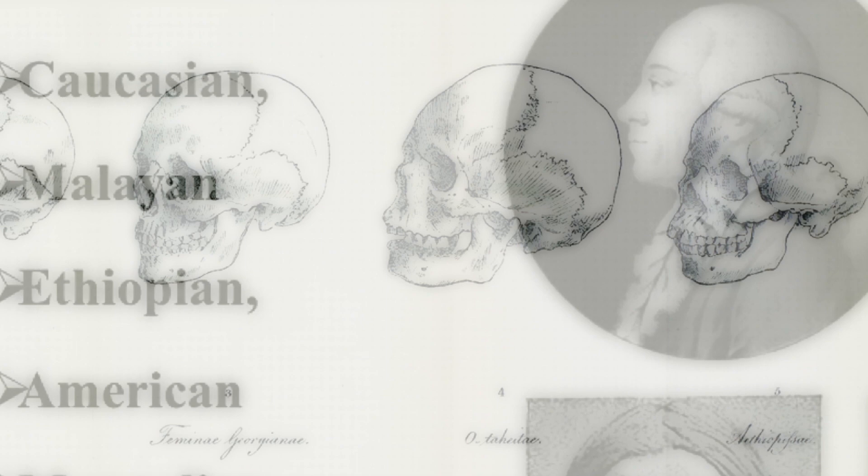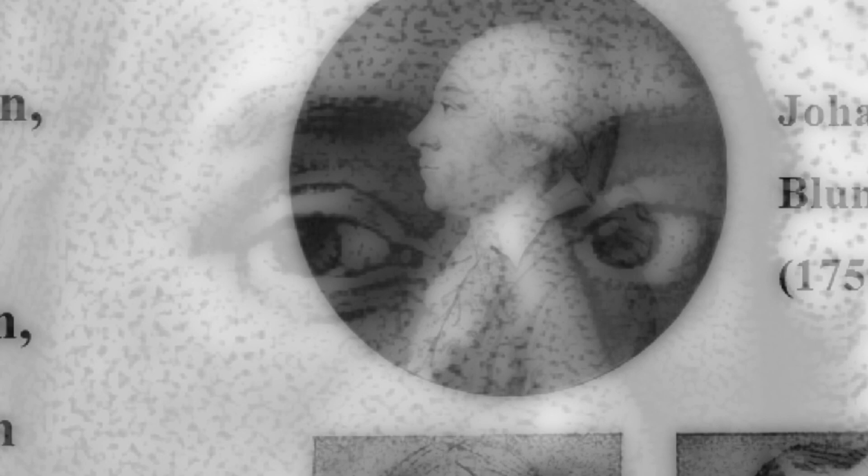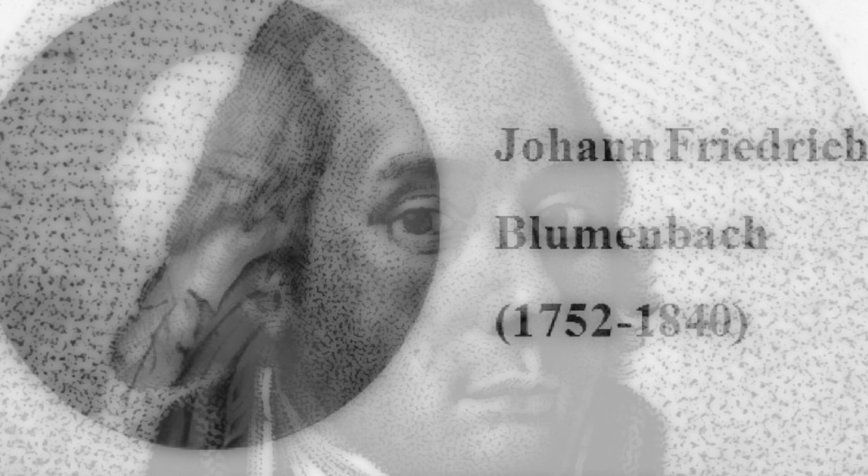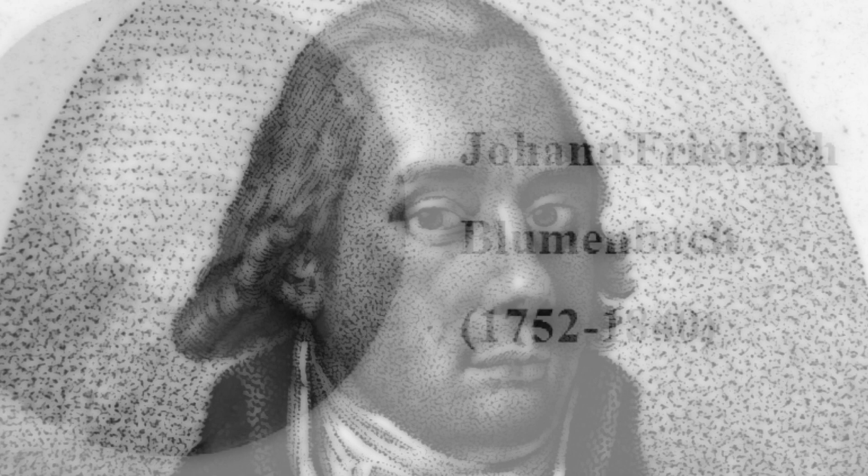All of this was based upon this young man's craniological research — his study of the human skull. His name was Johann Friedrich Blumenbach, a German national, a man of European descent, a physician, physiologist, and anthropologist. In 1779, Blumenbach divided the human species into five races based upon his research and observations of about 60 human skulls. So let that sink in a bit, brothers and sisters.